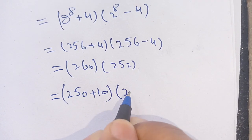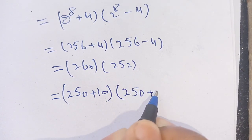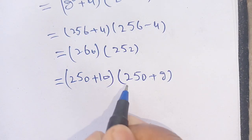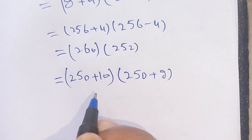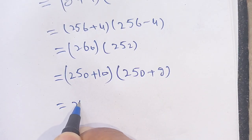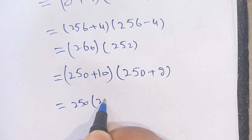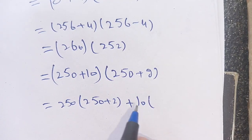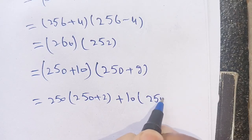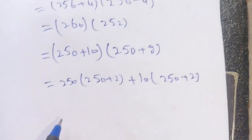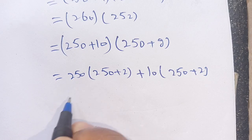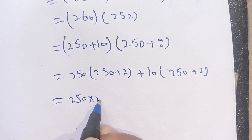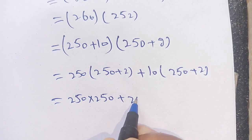We multiply (250 + 10) times (250 + 2). This expands to 250 times 250, plus 250 times 2, plus 10 times 250, plus 10 times 2.